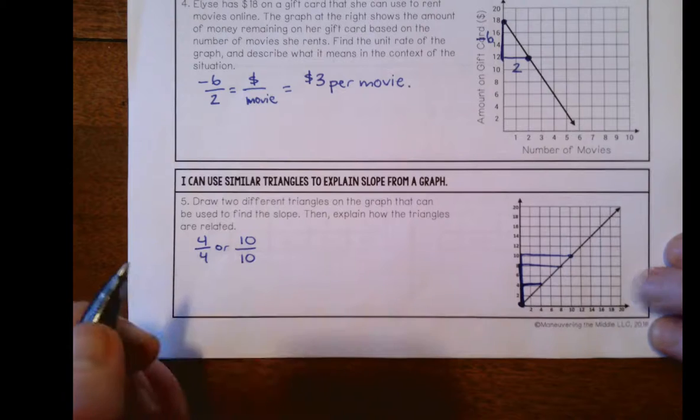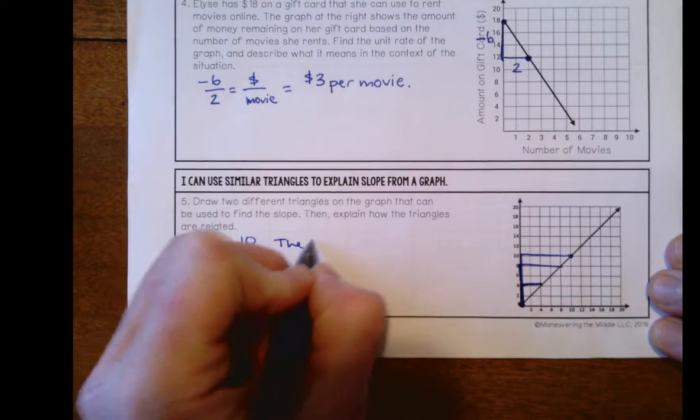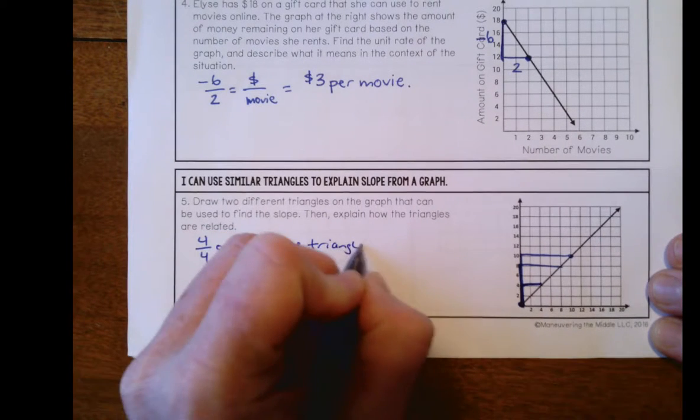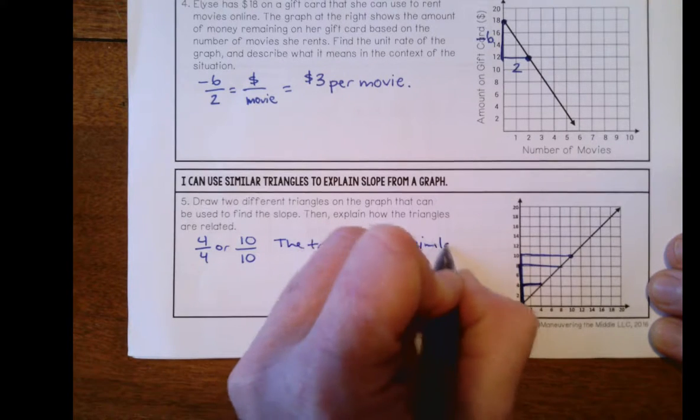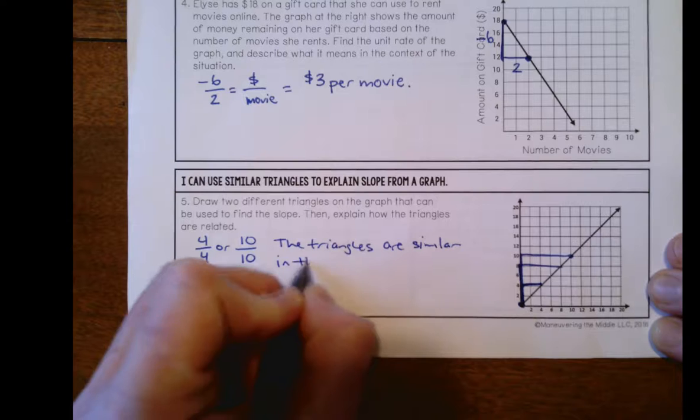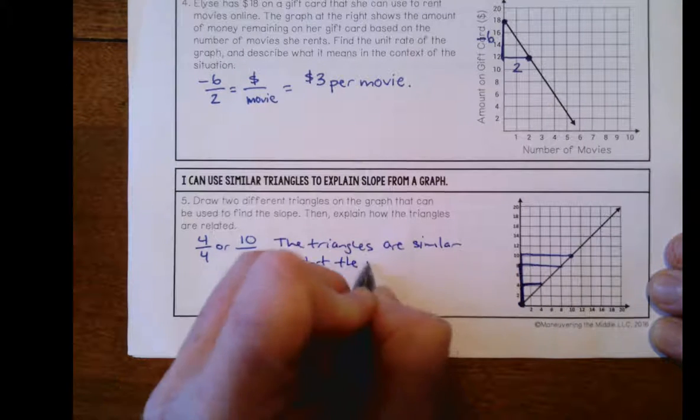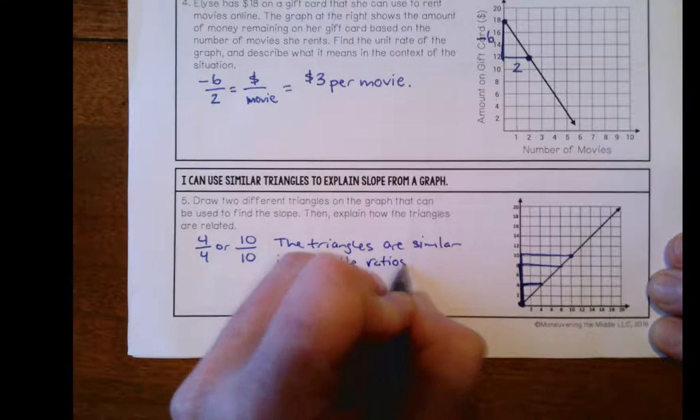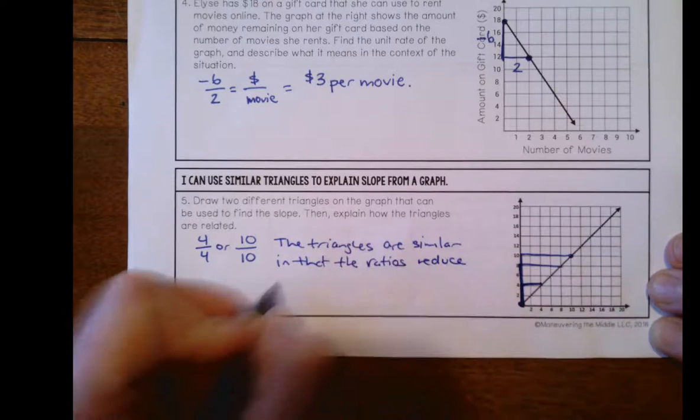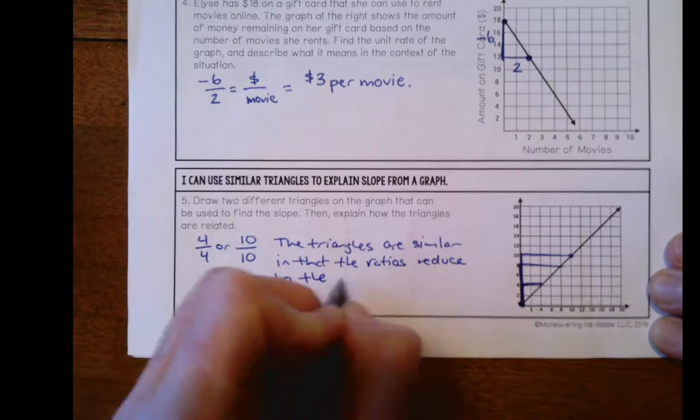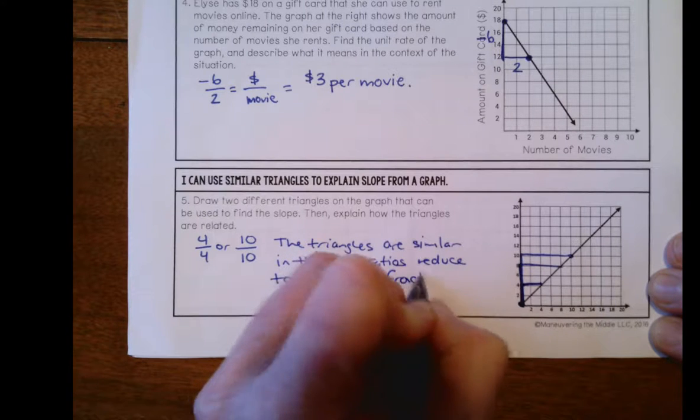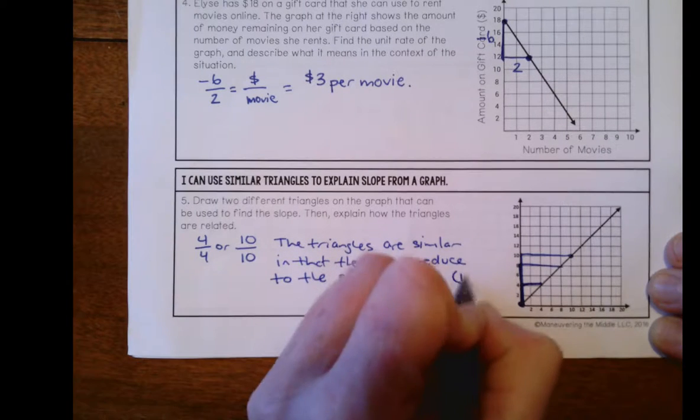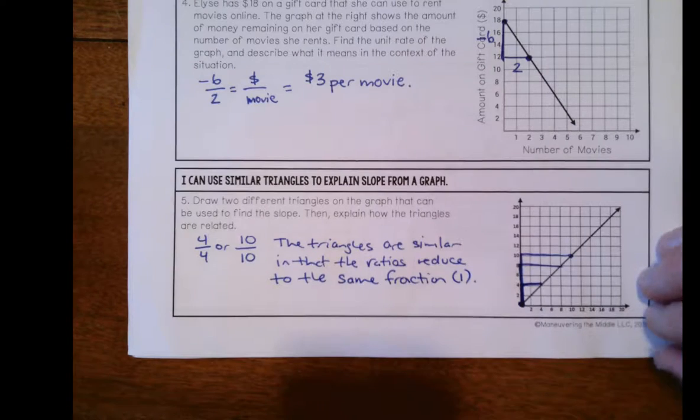The triangles are similar in that the ratios reduce to the same fraction, which in this case happens to be 1.